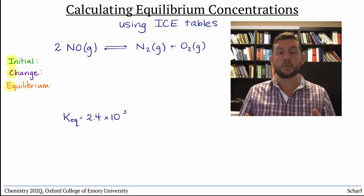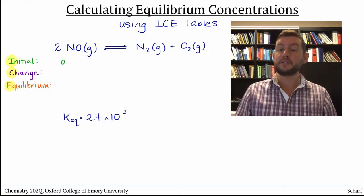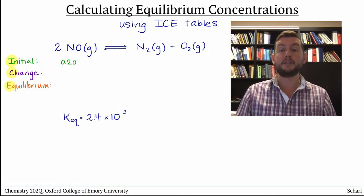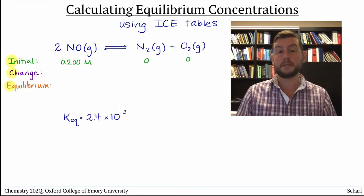To see how this works, let's imagine that we start with 0.0200 molar pure nitrogen monoxide, and no N2 or O2 have formed yet.